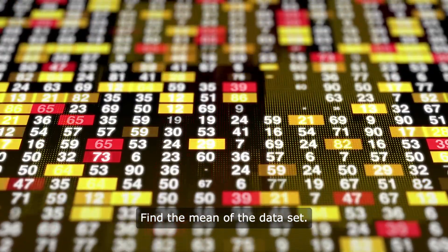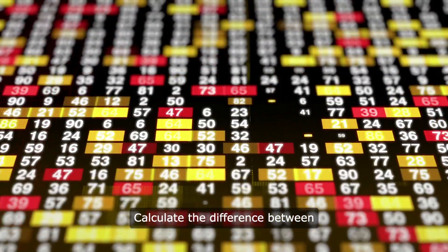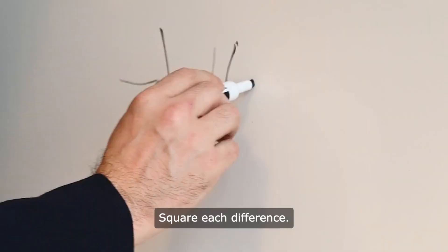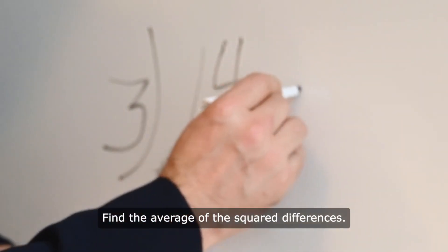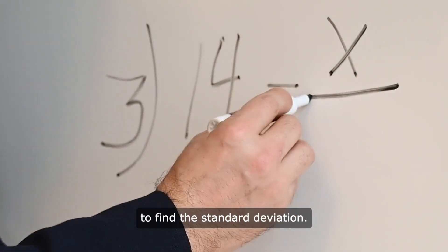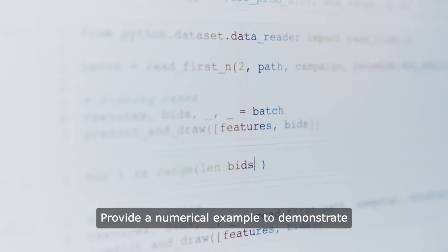Find the mean of the data set, calculate the difference between each data point and the mean, square each difference, find the average of the squared differences, and take the square root of the result to find the standard deviation.